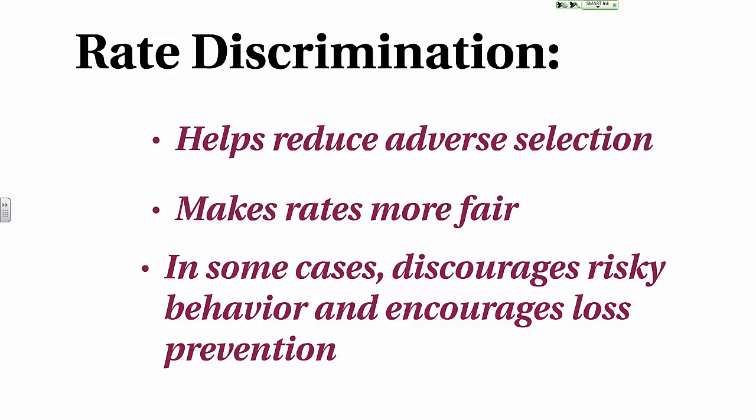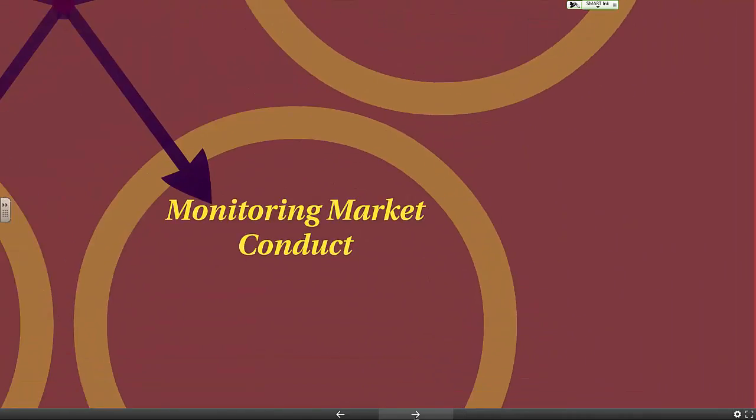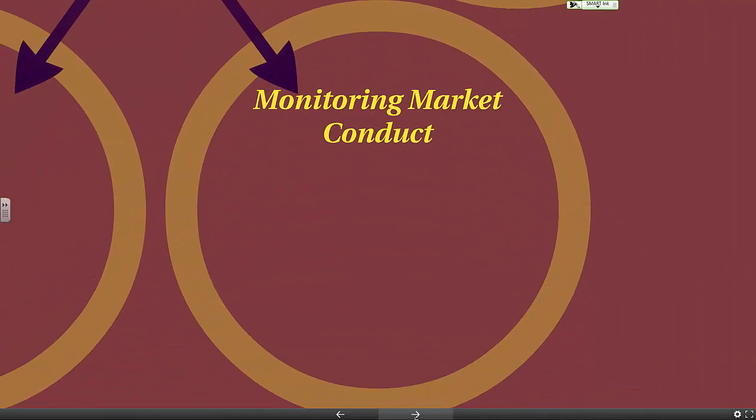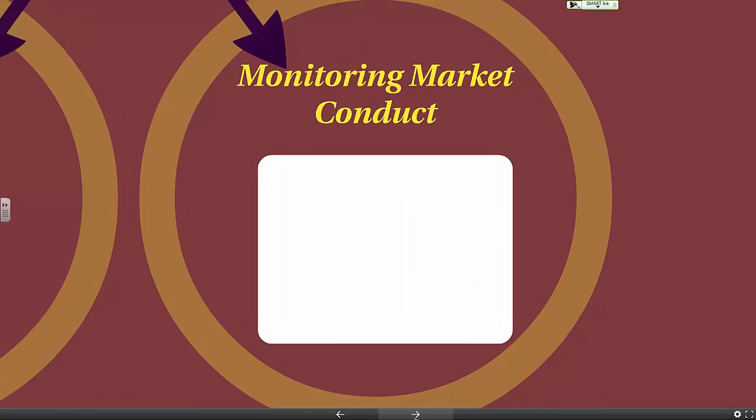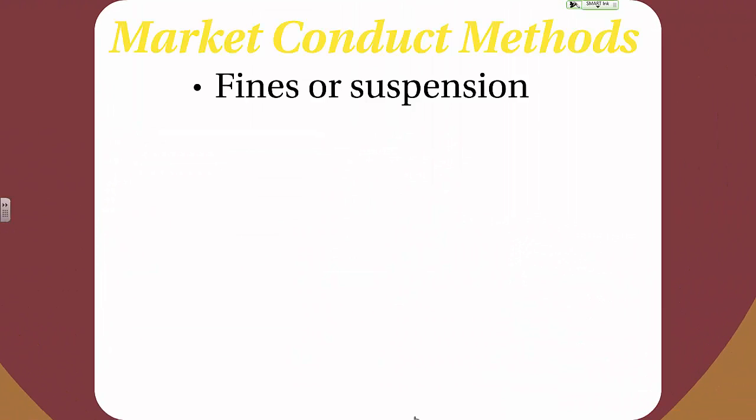For example, if you are a non-smoker, you wouldn't want to pay the same rates for life insurance or health care as someone who chooses to smoke. Now let's look at how insurance departments monitor market conduct. One of the most significant ways for enforcing market conduct rules are fines or suspension — for more minor offenses the insurance company or agent will be fined, but for ongoing or more significant offenses they may be suspended by pulling their license to operate or to sell insurance.